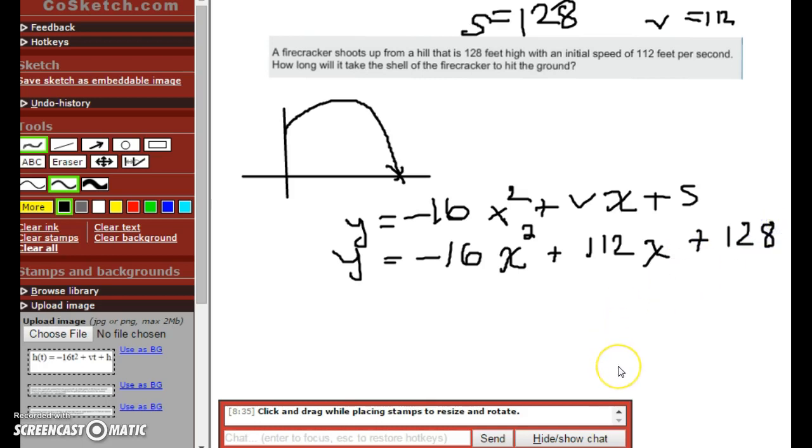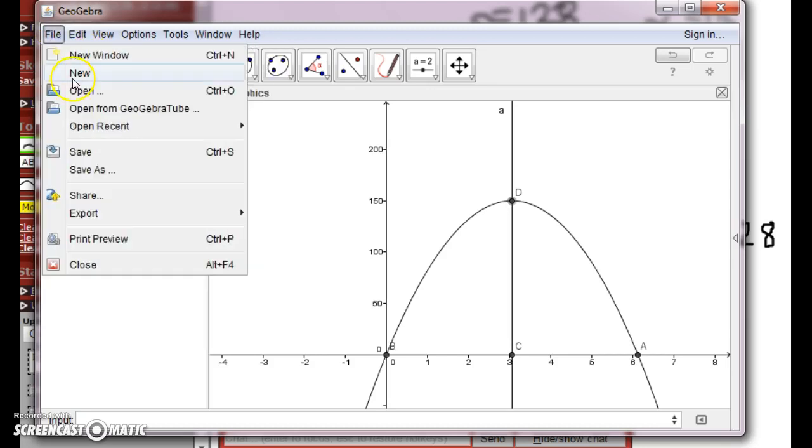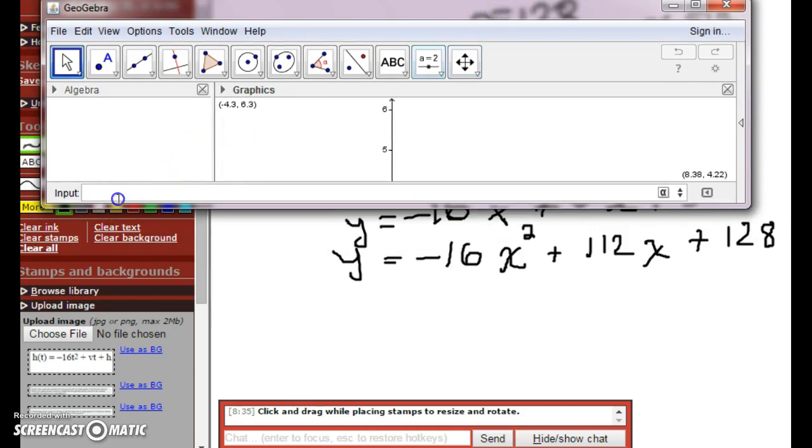So let's go to GeoGebra, and let's plug this in. I'm going to hit file, new, don't save. I'm going to bring this up so I can see the equation, so I don't make any errors. So I'm going to write it down. y = -16x² + 112x + 128.